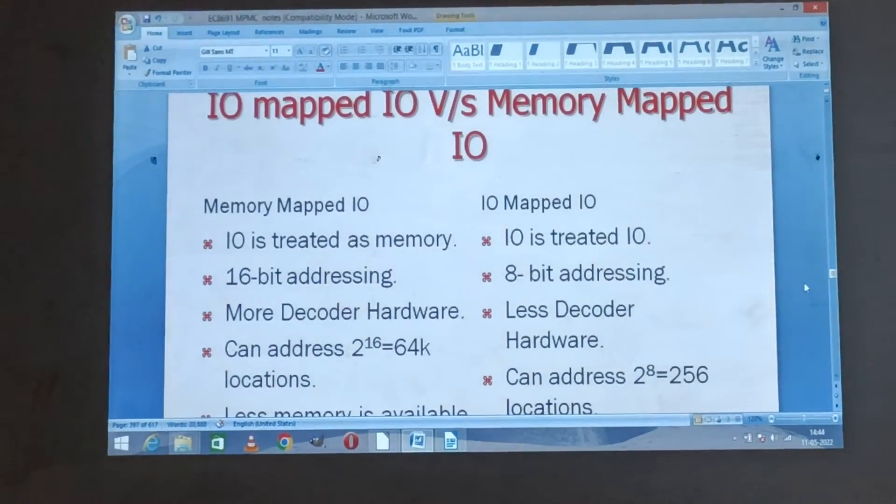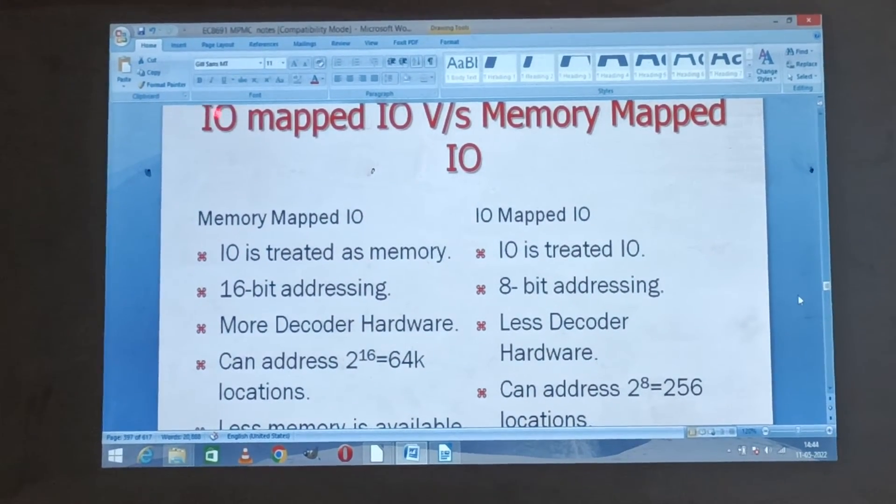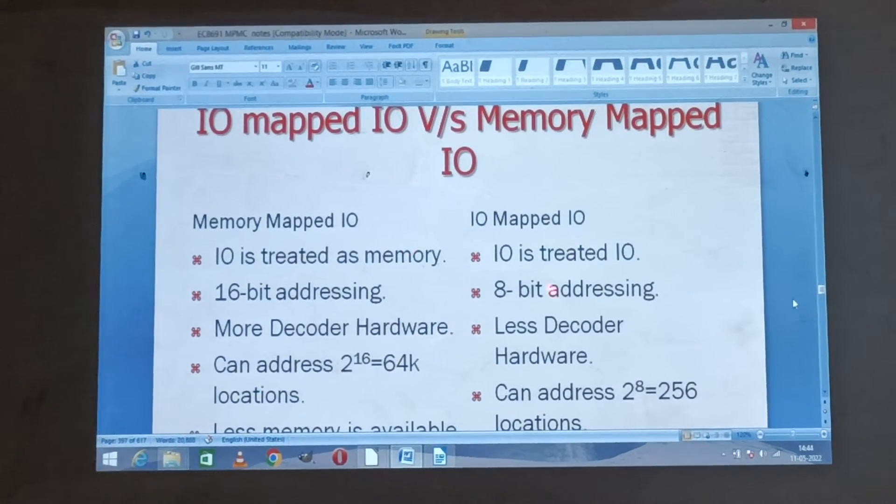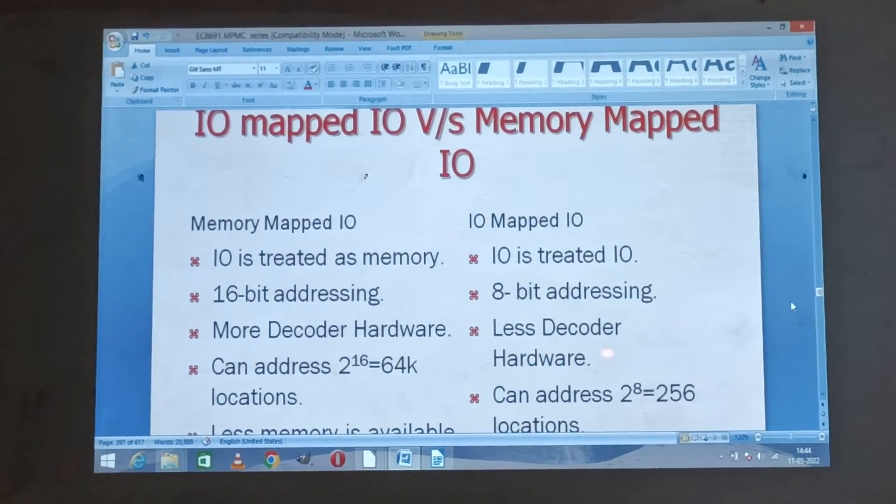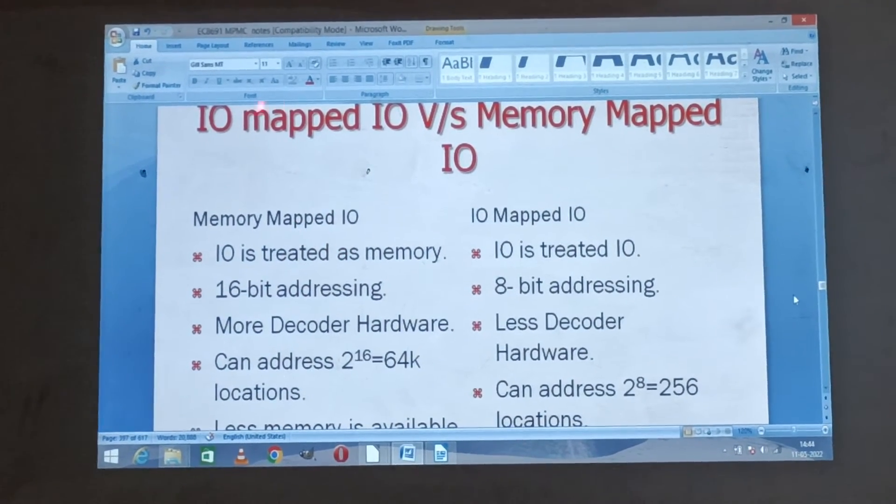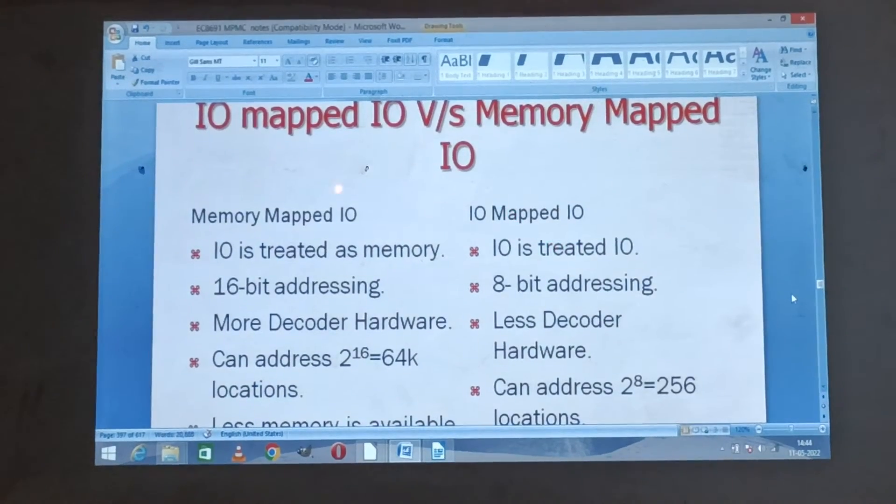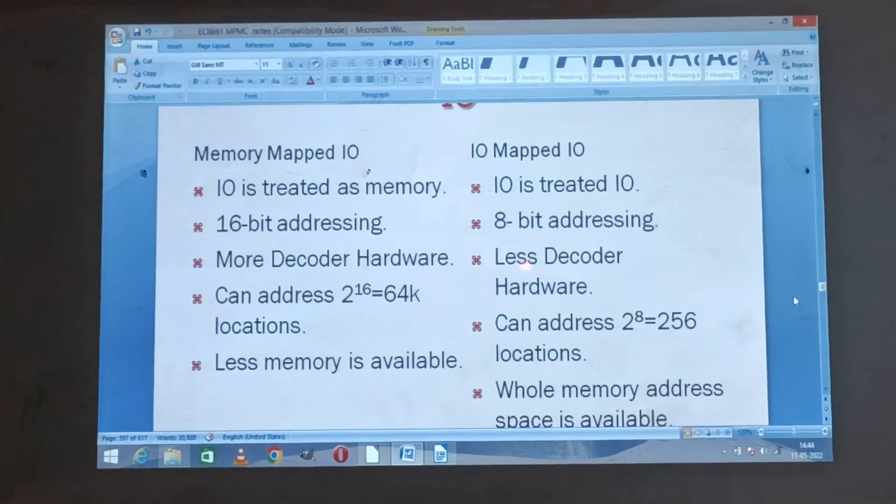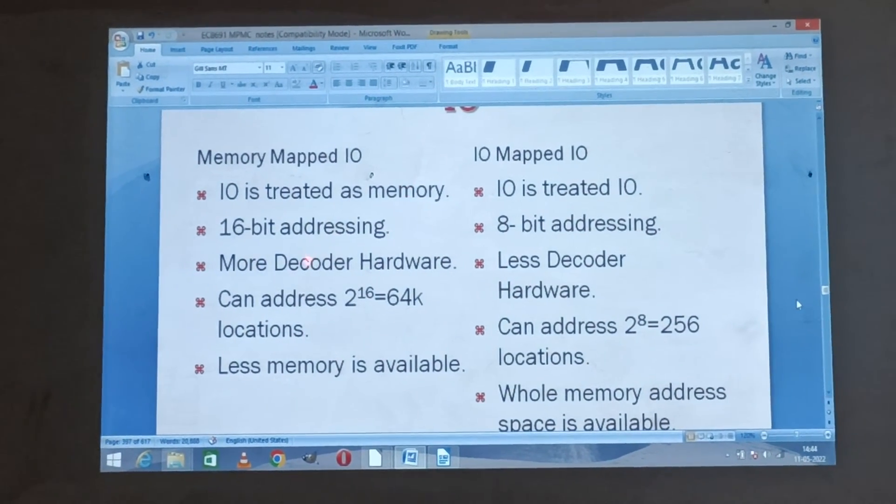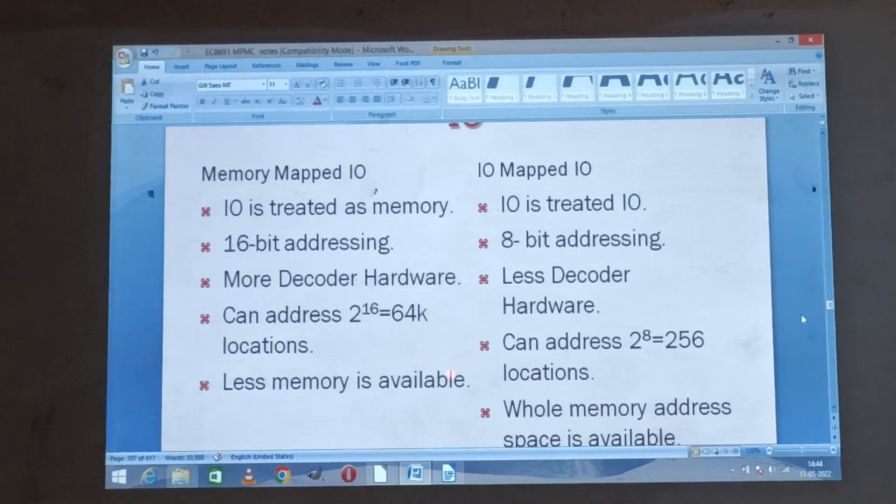I/O mapped I/O: this is very important concept. Input/Output mapped I/O versus memory mapped I/O. This is the difference between memory mapped I/O and I/O mapped I/O. Memory mapped I/O is treated as memory. I/O mapped I/O is treated as input output devices. This is 16-bit addressing versus 8-bit addressing. More decoder hardware is needed in memory mapped I/O. Input output I/O, less decoder hardware is needed.